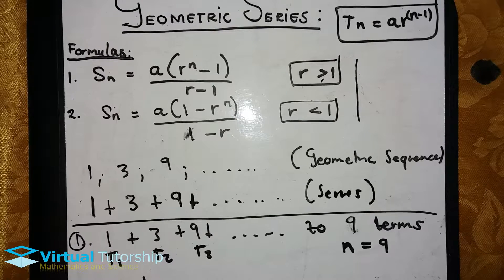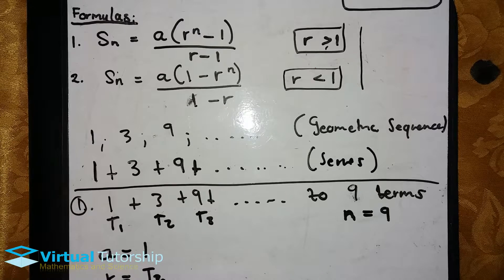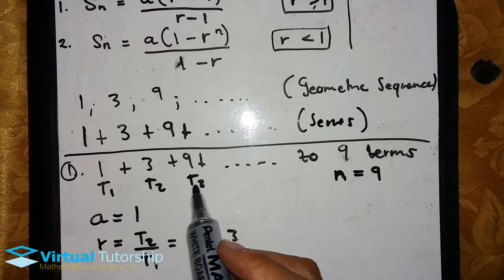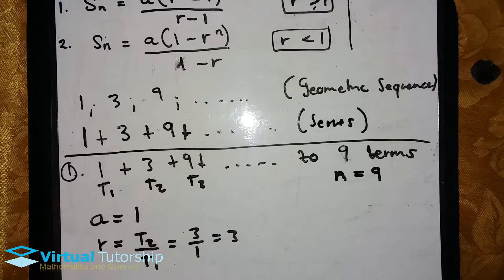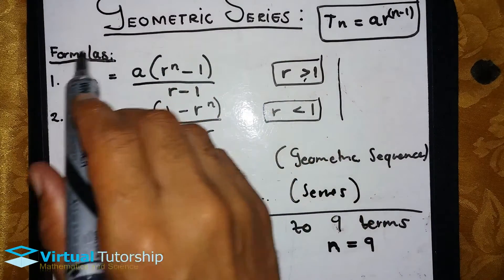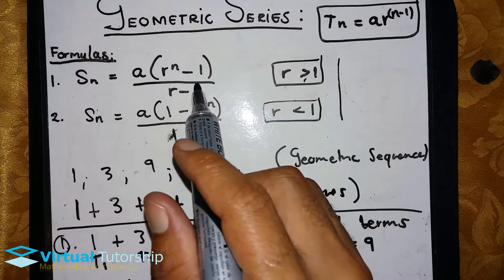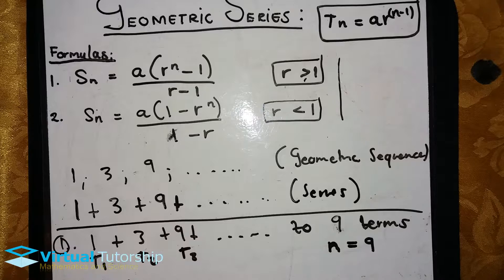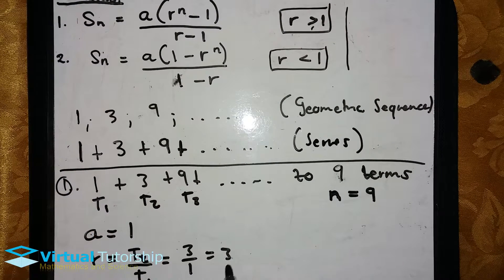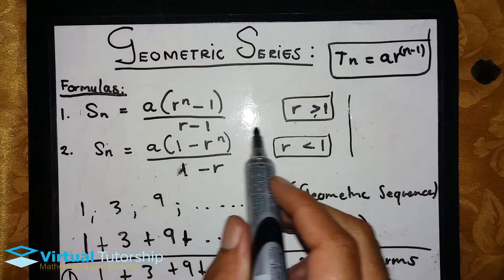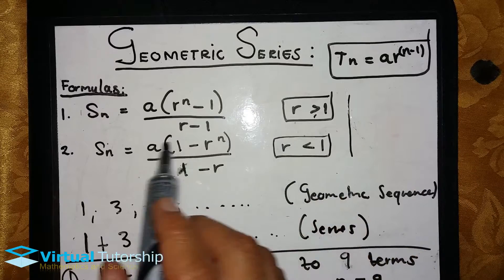And r is the geometric ratio, just like in a geometric sequence. To find r, we divide consecutive terms: T2 divided by T1 is equal to 3, and T3 divided by T2 is also equal to 3. We need a and r because the sum formula involves both a and r. Sn stands for the sum of n terms. Since r is equal to 3, which is greater than 1, we use the first formula.